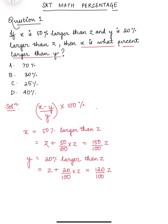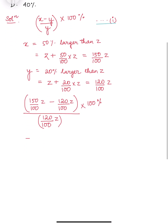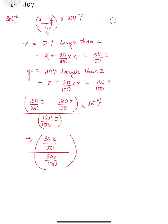Now when we substitute them in this equation, we get (150/100)z minus (120/100)z, divided by (120/100)z, into 100%. That gives us (150 minus 120) which is 30z/100, divided by 120z/100, into 100%. So z cancels out and 100 cancels out.